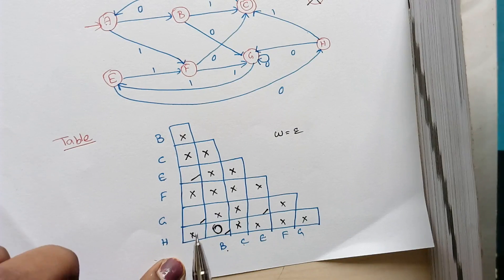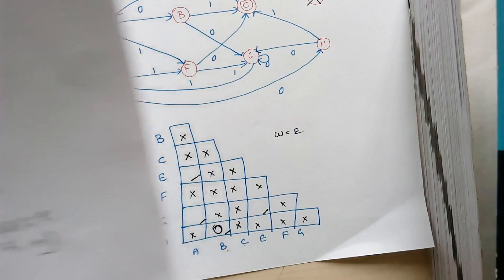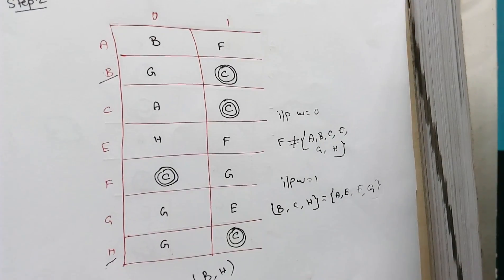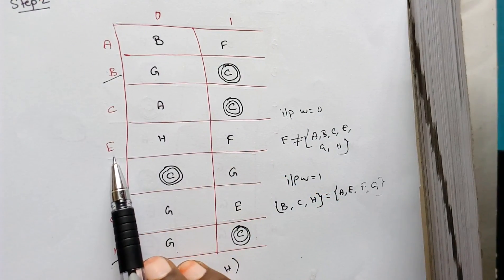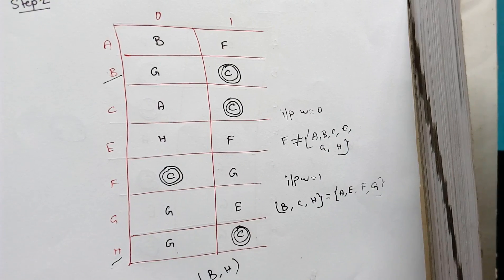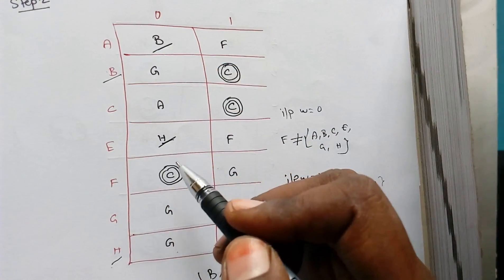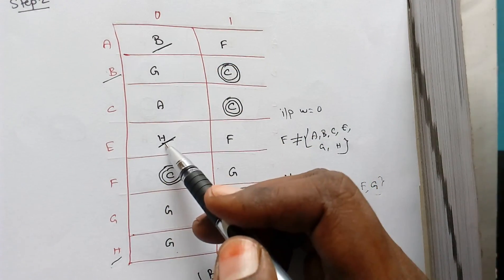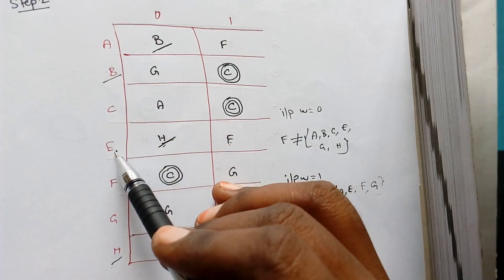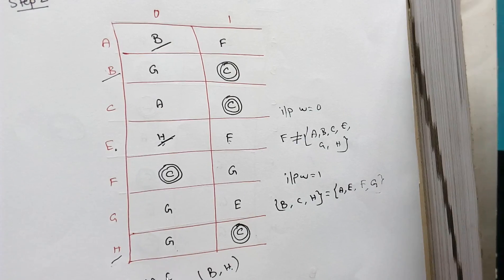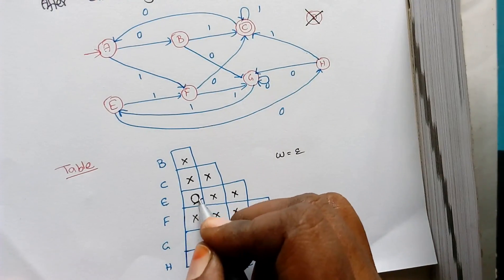Next, check A and E. The transition for A goes to B and F; the transition for E goes to H and F. We already know that B and H are equivalent, so that part of the transition is effectively the same. The F transition is also the same. Therefore A and E are also equivalent states. We update the table accordingly.